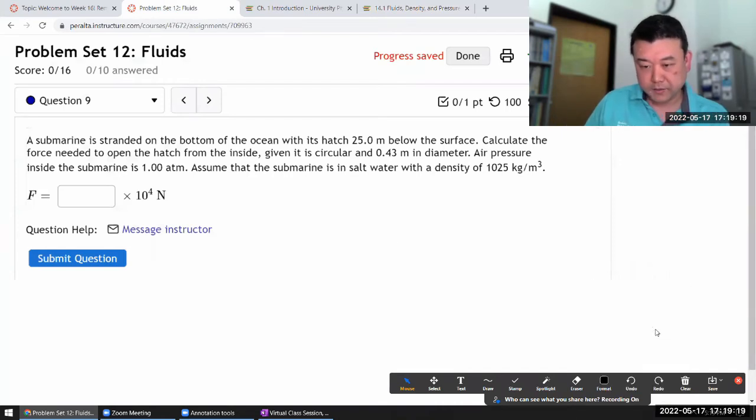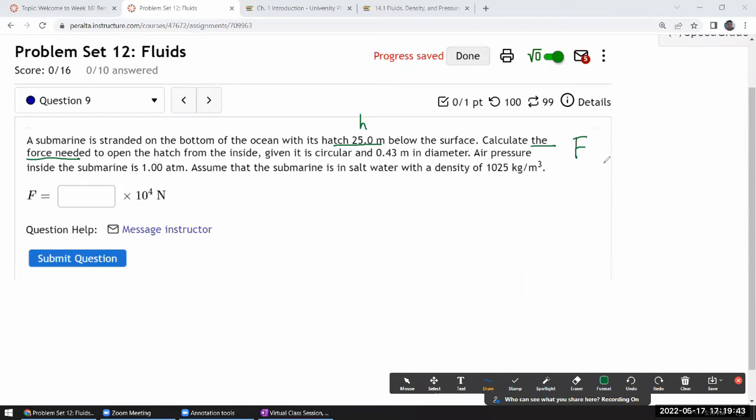Let me just write it out. So we need, so let me just label this as H. That's how much height of fluid I have above the surface. It says calculate the force needed to open the hatch from the inside. So for this force needed, I'm going to need to say, okay, force that matches with the pressure that the force is exerting or overcoming is going to be pressure times area. And this comes from the definition of pressure as force per area. From the inside, given it is a circular and 0.43 meter in diameter. Okay. Let me just label this as D.